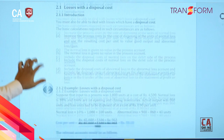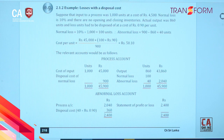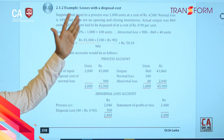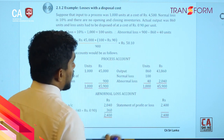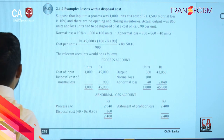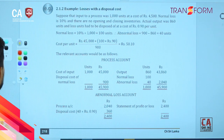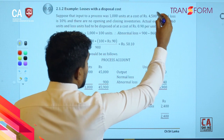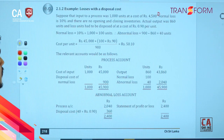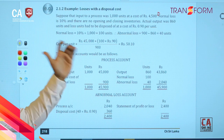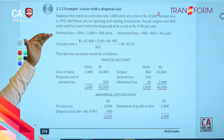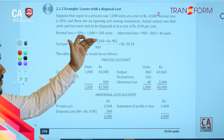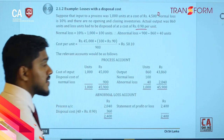I will show you an example. Here you have given that input to the process is 1,000 units at a cost of 45,000. Normal loss is again 10 percent and there is no opening or closing inventory. Actual output was 860 units, and the loss units had to be disposed at a cost of 0.90, that is 90 cents per unit.